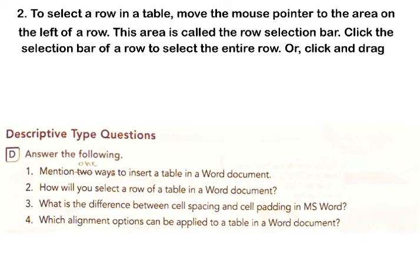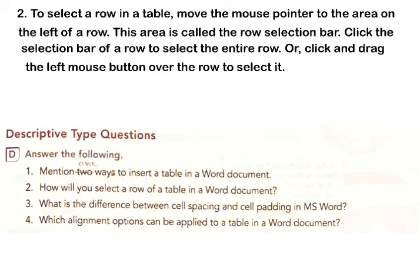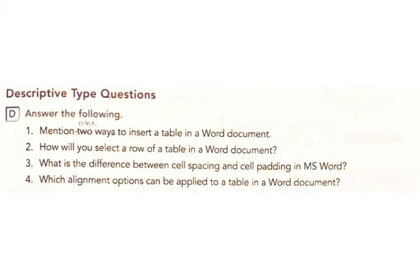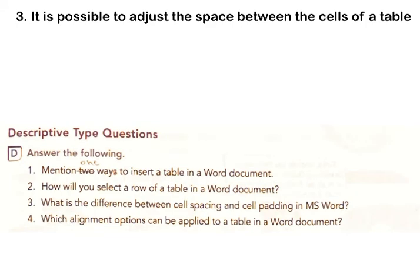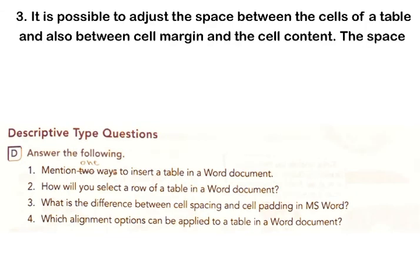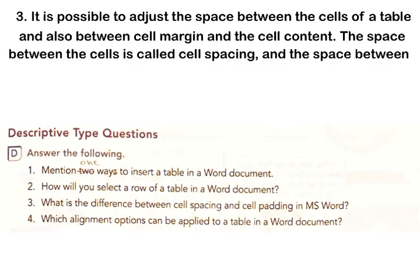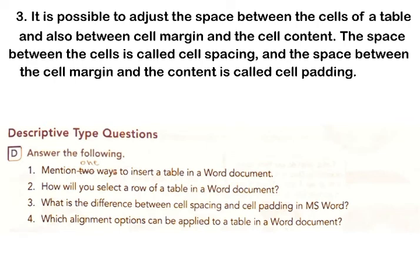Or, click and drag the left mouse button over the row to select it. 3. What is the difference between cell spacing and cell padding in MS Word? Answer: The space between the cells of a table is called cell spacing, and the space between the cell margin and the content is called cell padding.